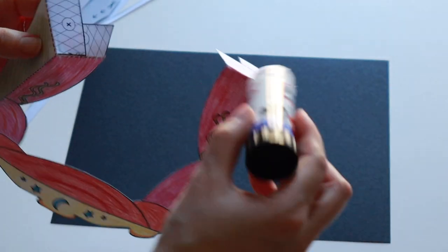You then need to put glue across the bottom of each tab and stick it to the centre of your base.